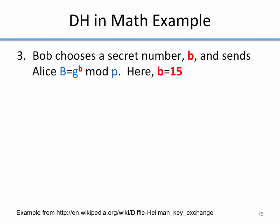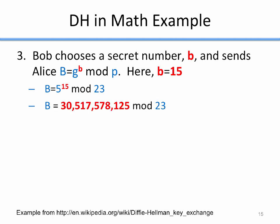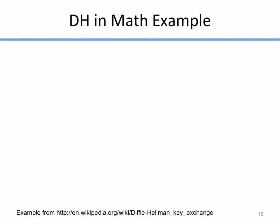Now Bob's going to do the exact same thing. He's going to choose a secret number, lowercase b, and calculate capital B, which is g to the little b mod p. If we make b equal 15, then capital B equals 5 to the 15 mod 23. 5 to the 15 is this really big 30 billion or so number; modulo 23 gives 19. Now Alice and Bob have both calculated capital A and capital B and sent those to each other, so they've exchanged them — they're at the point in the color mixing scenario where they've exchanged their mixed buckets of paint.